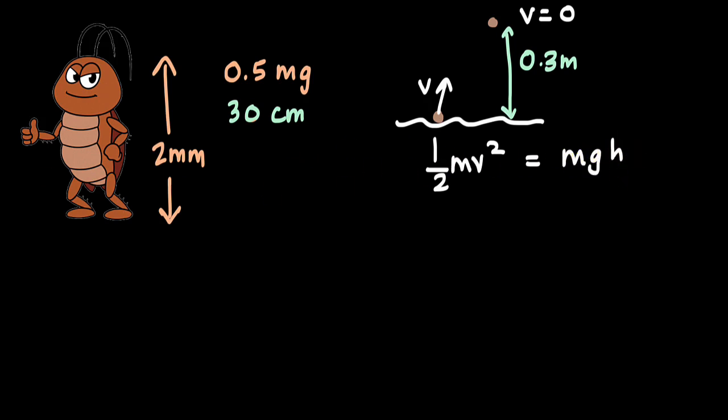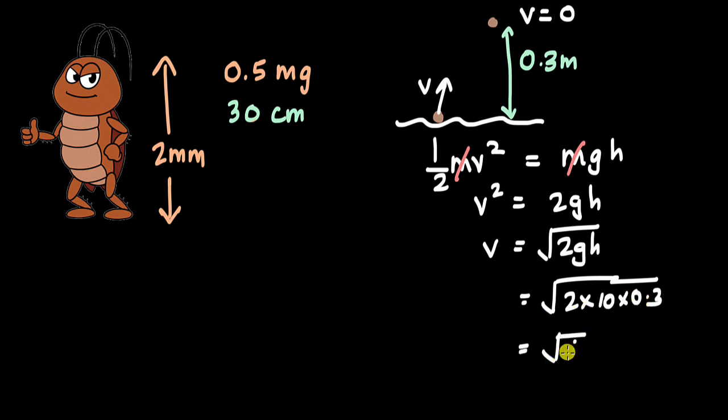The good thing about this is that mass gets cancelled off. v square is equal to 2gh so v is equal to under root of 2gh. When we plug in values, g we can take as 10, h is 0.3, so this is under root of 2 into 10 into 0.3, and this is 6, so under root of 6 is approximately 2.45 meters per second. So these are the takeoff velocities for fleas.